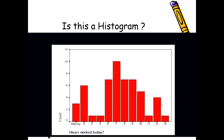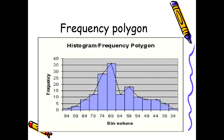My next question to you: is this a histogram? You have to give me an answer. Now, for the same quantitative continuous data on which we drew a histogram, we can find the middle values of each bar — the central values — and combine them with a line. This is known as a frequency polygon: a curve drawn by joining the center points of the histogram. Frequency polygon is again based on quantitative continuous data; it cannot be drawn for qualitative data.